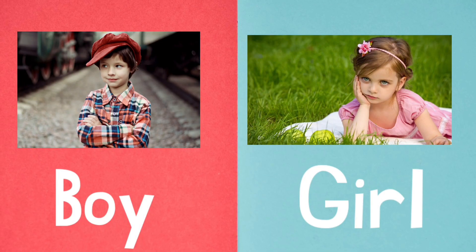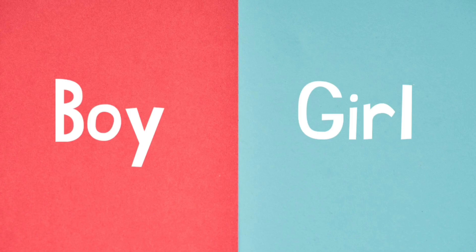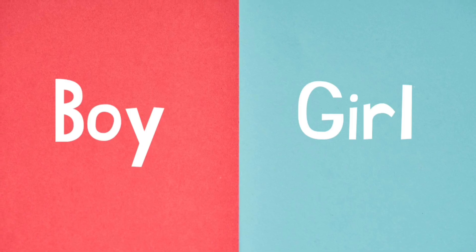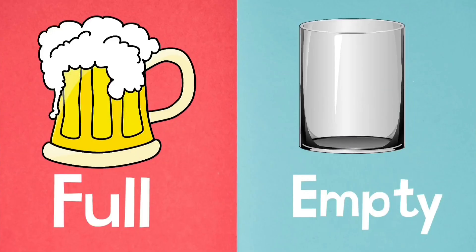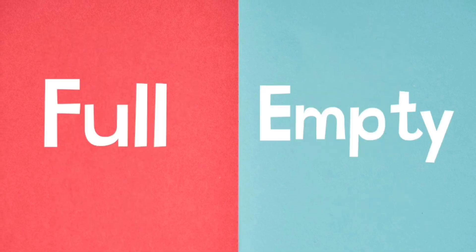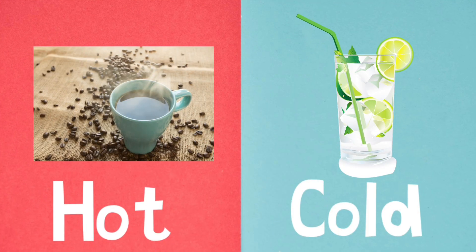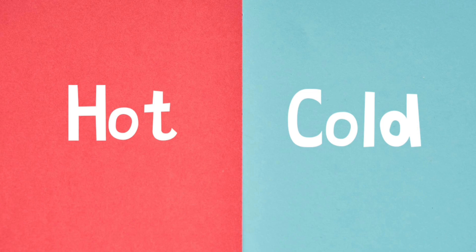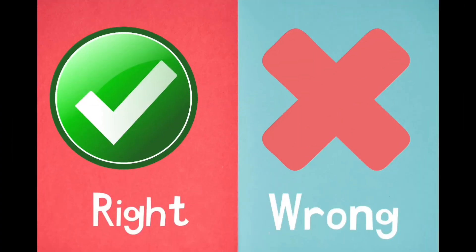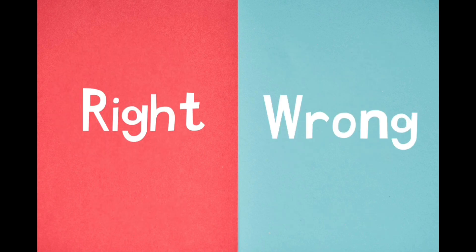Boy, girl. Full, empty. F-U-L-L, full. E-M-P-T-Y, empty. Hot, cold. H-O-T, hot. C-O-L-D, cold. Right, wrong. R-I-G-H-T, right. W-R-O-N-G, wrong.